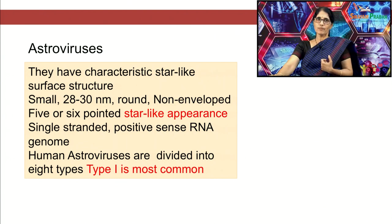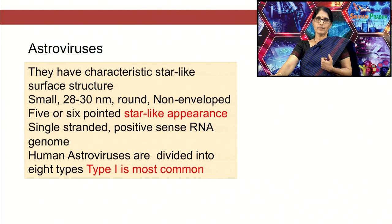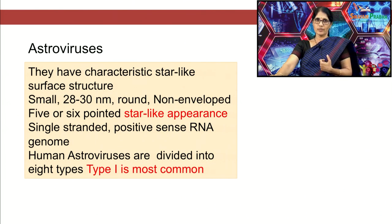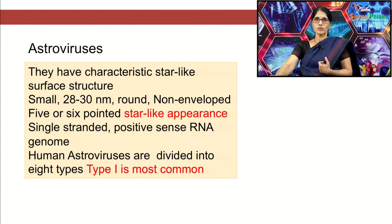The fourth group of viruses causing gastroenteritis in humans is astroviruses. These viruses have a typical star-like surface appearance, which is why they are known as astroviruses. They are small RNA viruses about 28 to 30 nanometers in size, non-enveloped, with a positive-sense single-stranded RNA genome. Human astroviruses are divided into 8 types, of which type 1 is the most common.